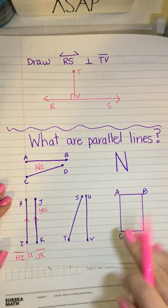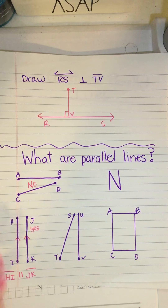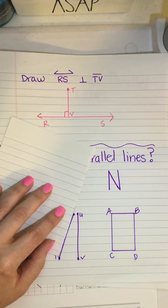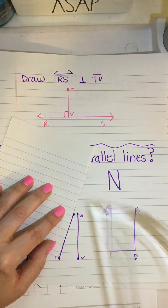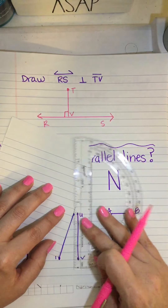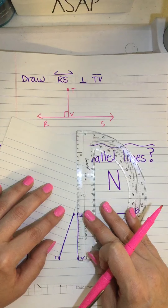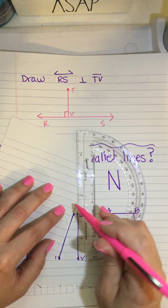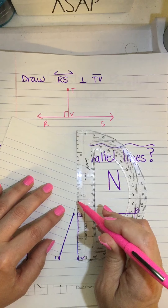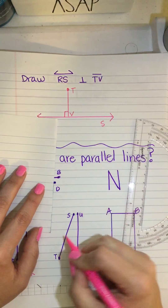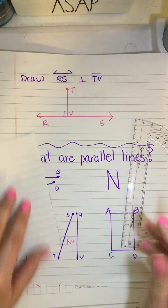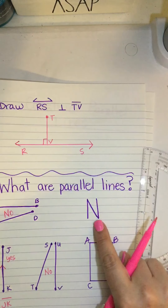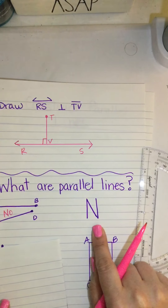We can look at this next example. I take my tool, line it up, then take my protractor and line them up against each other. Eventually you see right about here they intersect — so those are not parallel lines.